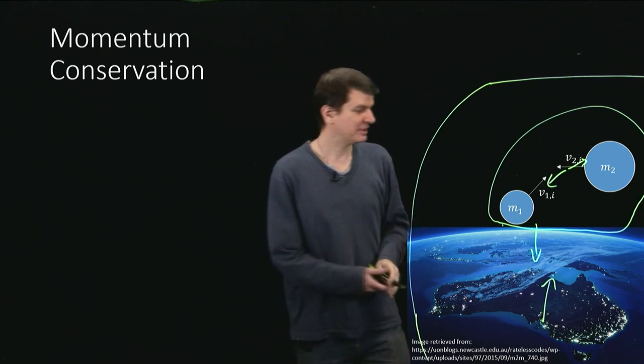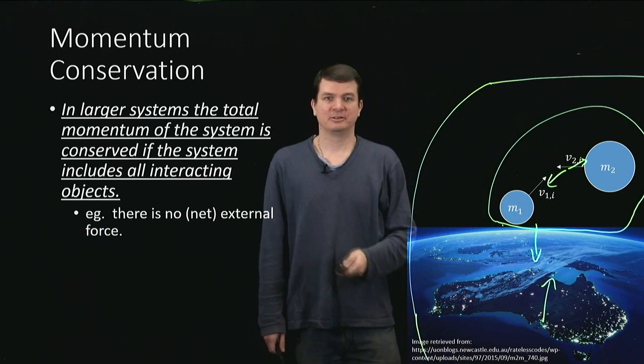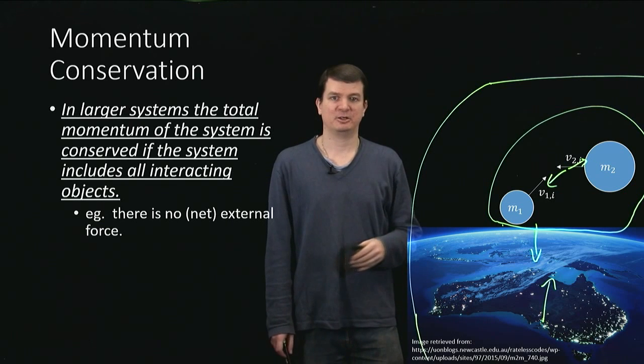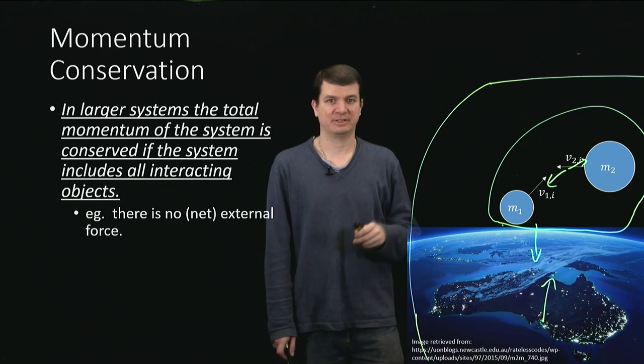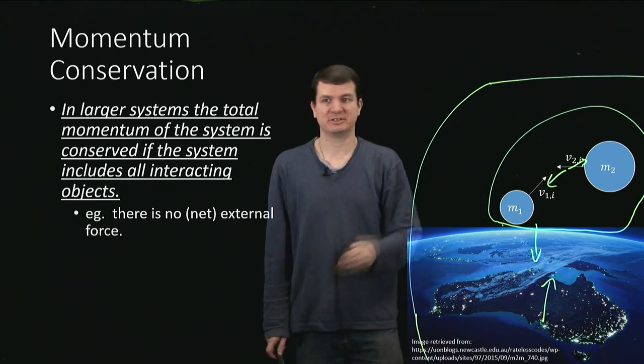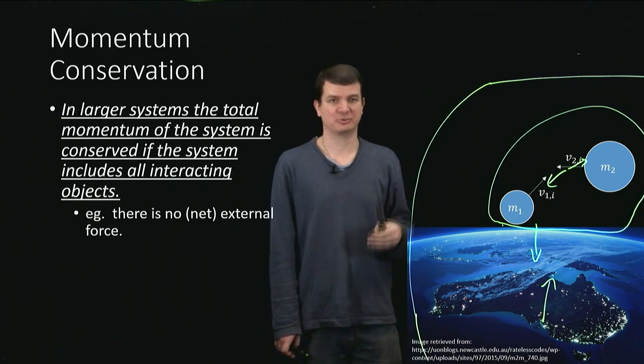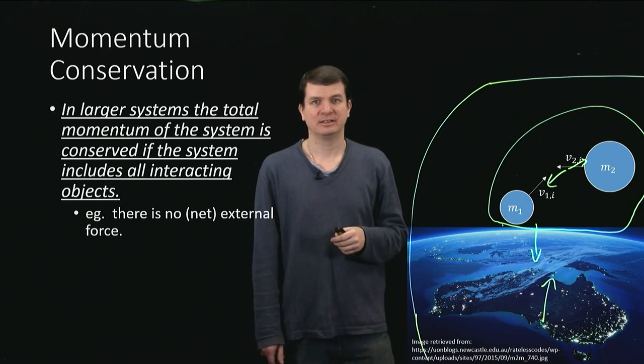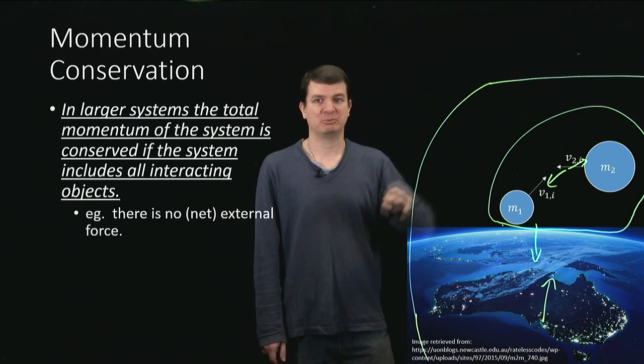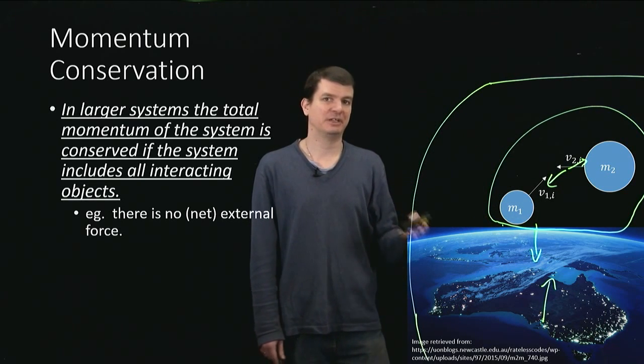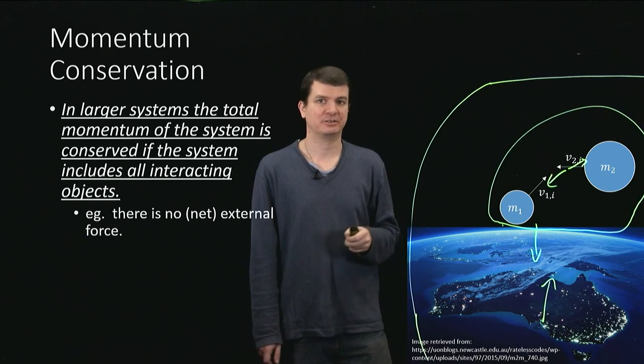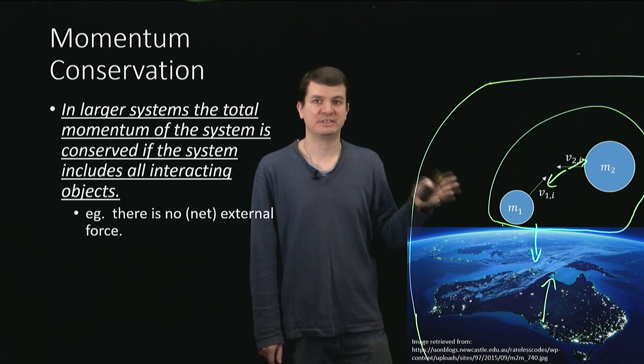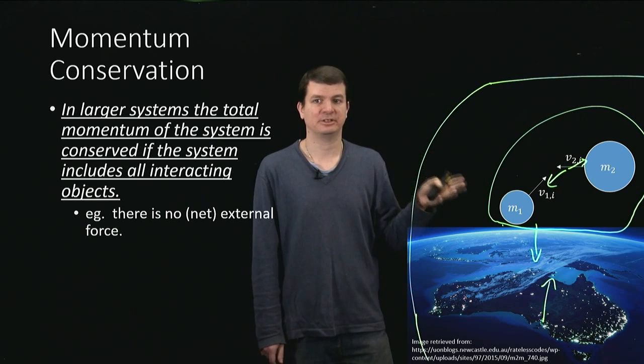So when we're thinking about momentum conservation, we have to think carefully about what system we've chosen. And so whenever we've got these larger systems of many bodies, we have to make sure that if we want to apply the idea of momentum conservation, that we've chosen our system to be big enough, basically, to include every interaction that's actually occurring. Another way of saying that is that there should be no external force.